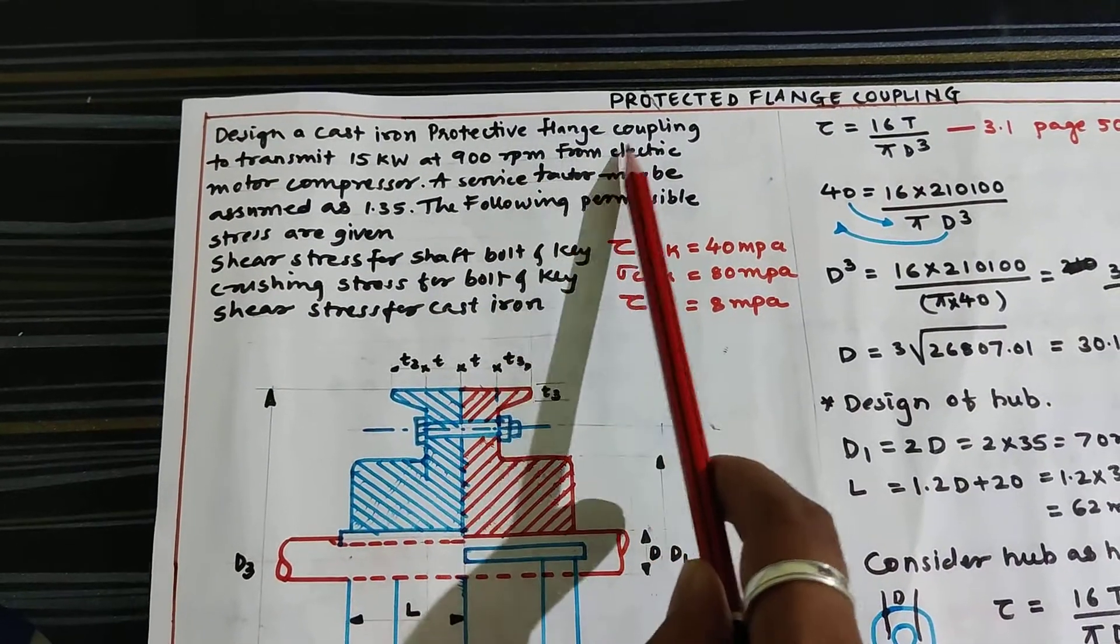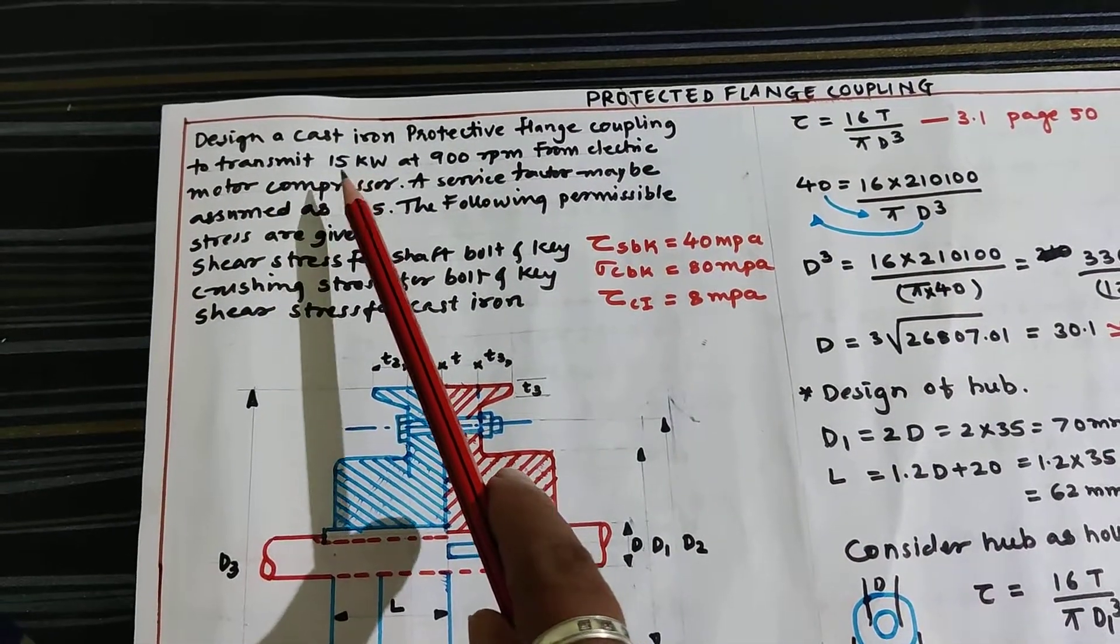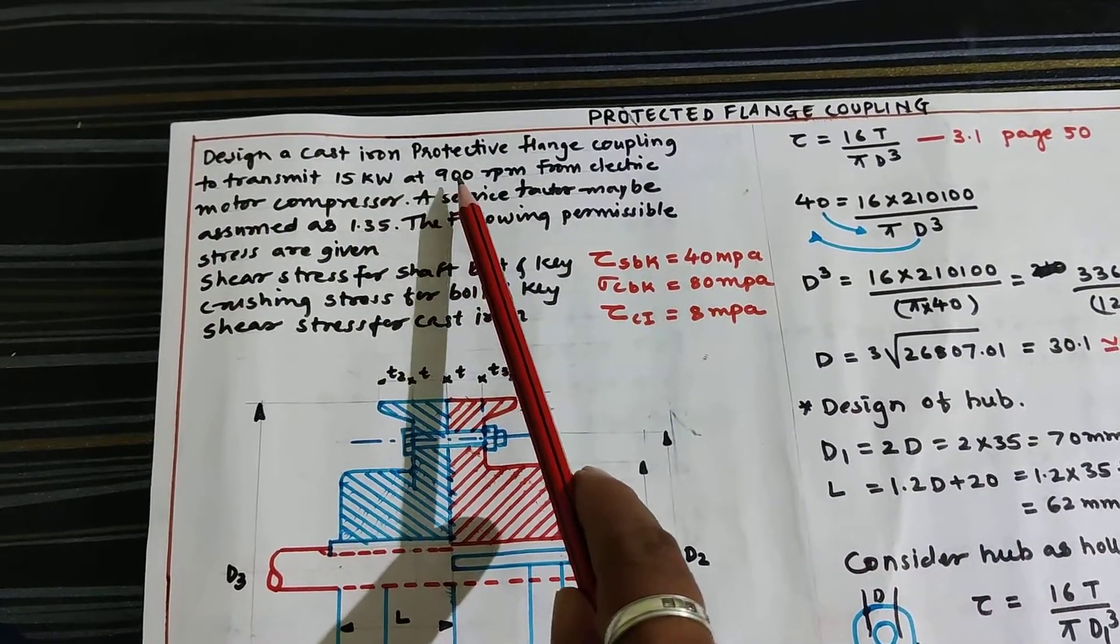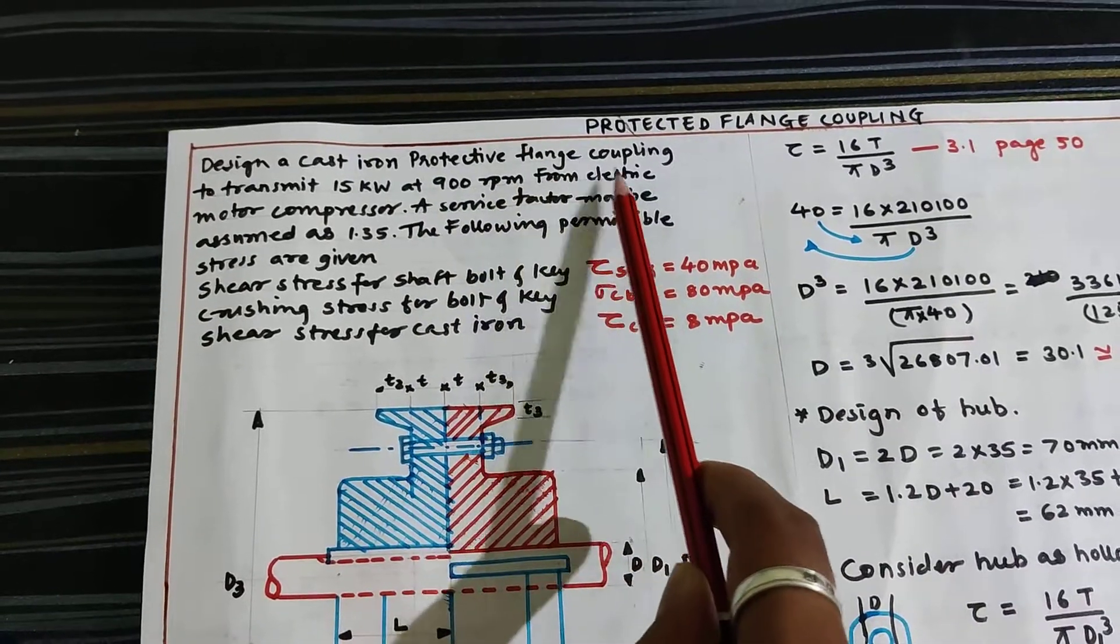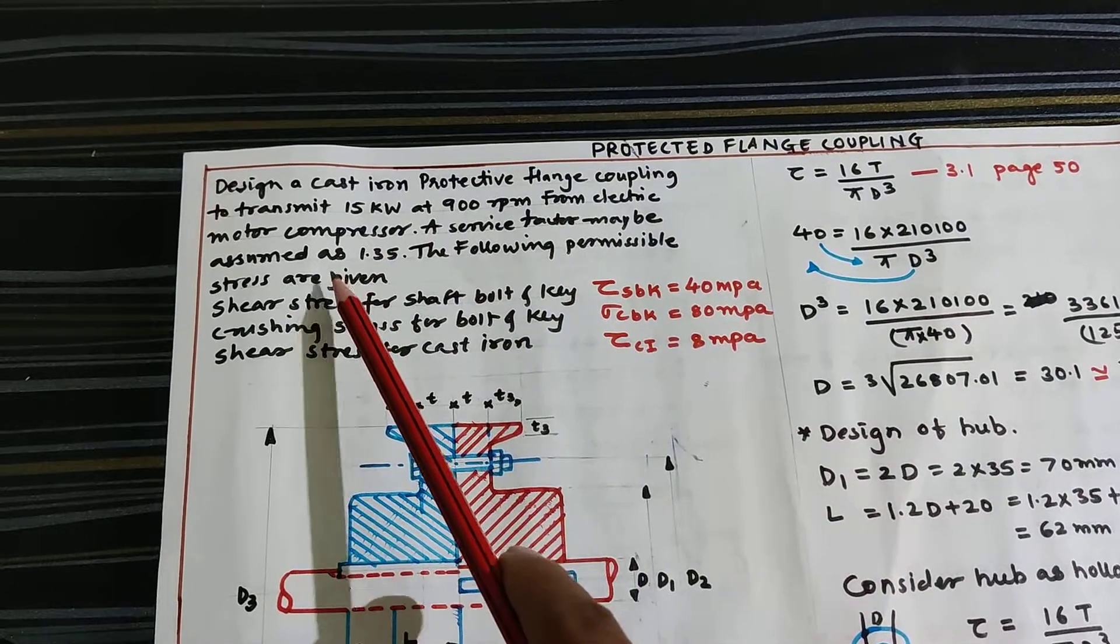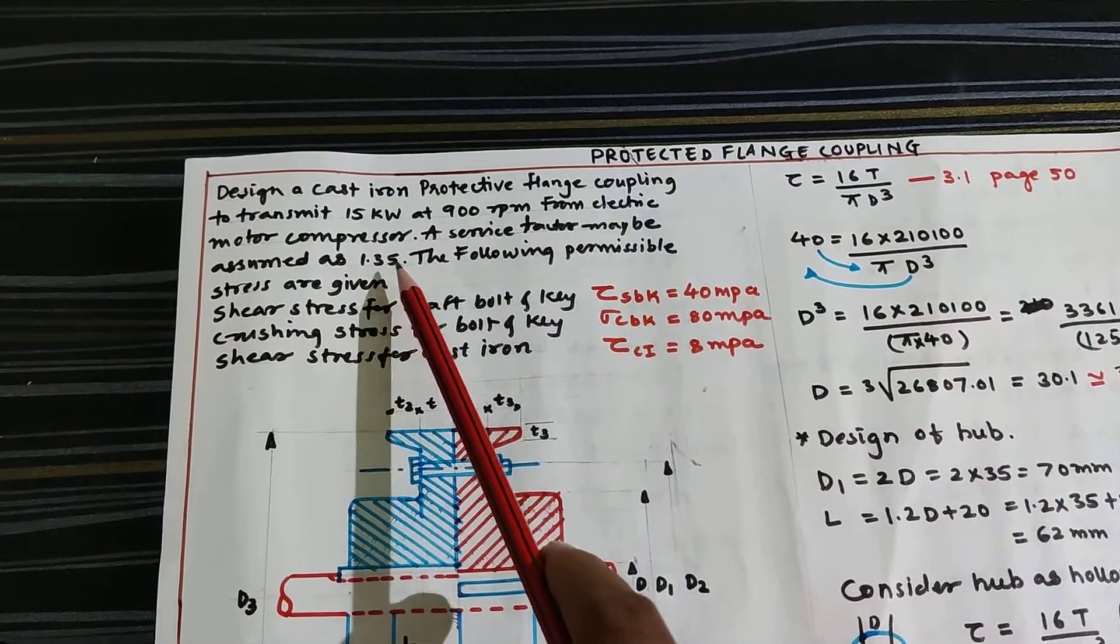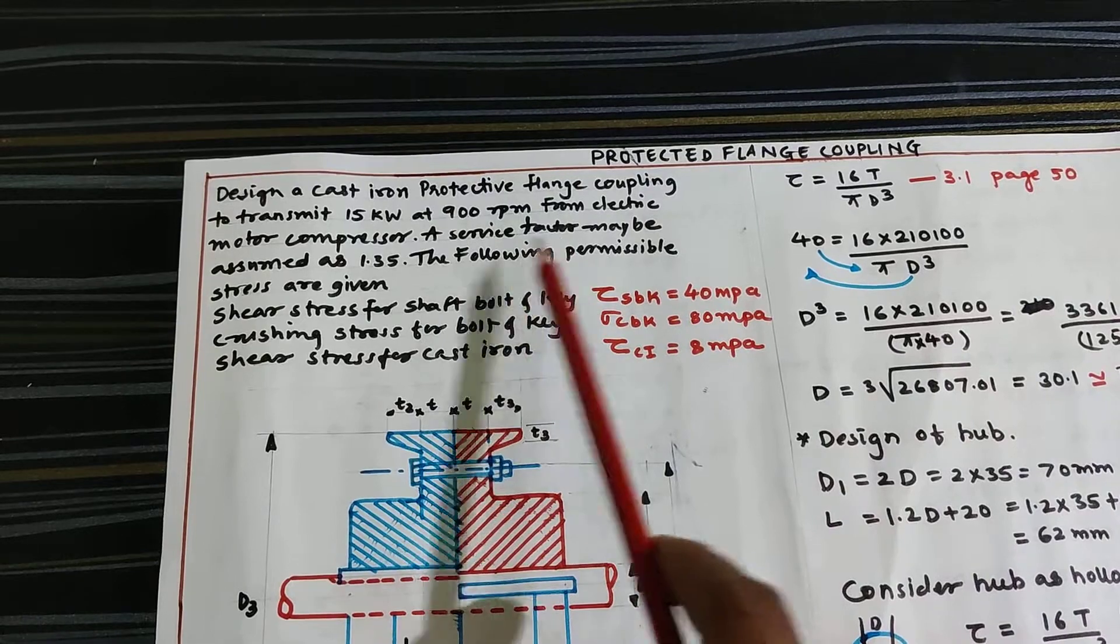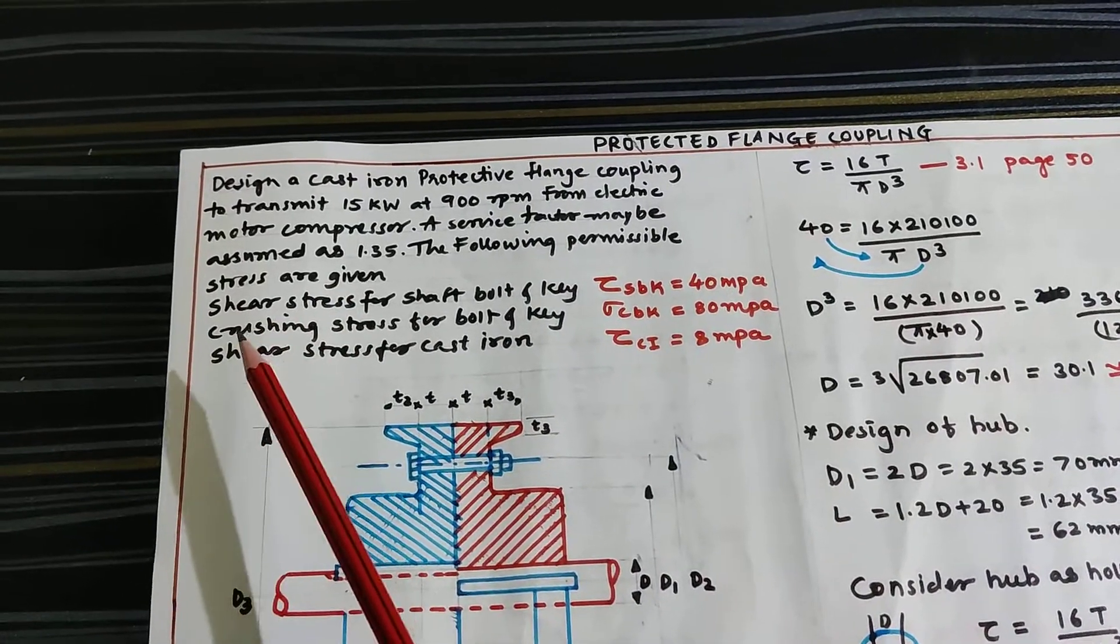Design a cast iron protective type flange coupling to transmit 15 kW at 900 rpm from electric motor compressor. A service factor may be assumed as 1.35.